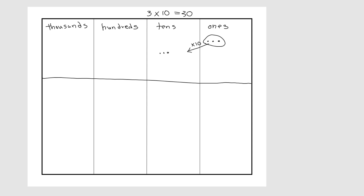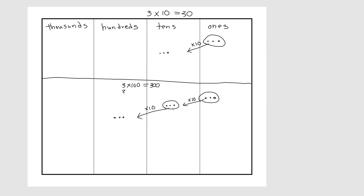Now let's look at what if we want to do three times a hundred. We start with our three ones and move them ten times to the tens column, then move them again to the hundreds column, and now we have three hundreds. When we're multiplying by a hundred we're actually going two columns — from ones to tens and then tens to hundreds. This is the same as three times ten, two times.